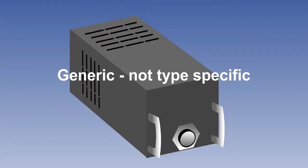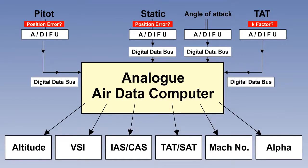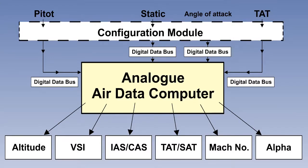Air data computers are usually made by specialist manufacturers or subcontractors rather than Airbus or Boeing themselves. They are therefore usually off-the-shelf items which can be fitted into many aircraft. However, each aircraft type will have its own position error for the pitot and static sensors, and its own recovery factor for the temperature probe. We therefore have to have a device which may well be combined with the interface units to allow for position error and k-factor for each aircraft type.